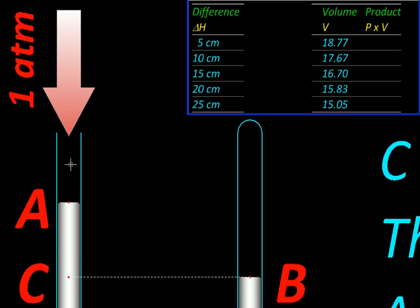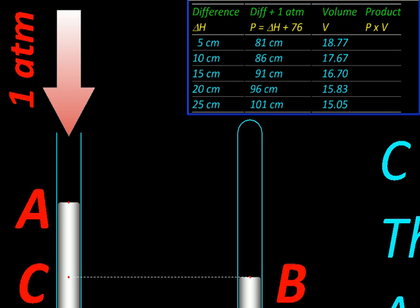So whatever readings we have got of this height difference, they need to be added 76 centimeters of mercury to get the actual pressure. So that's what we do next. We add 76 to all these values, delta H values, to get the actual pressure. And now we are ready for calculation. So this is the actual pressure in terms of mercury column.